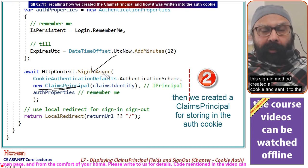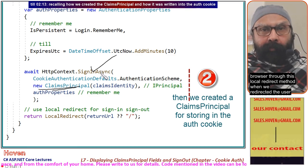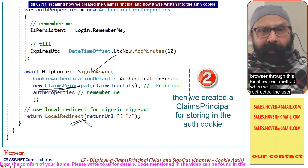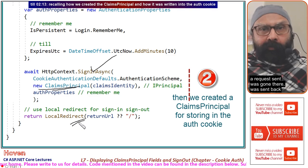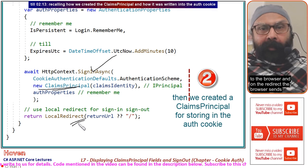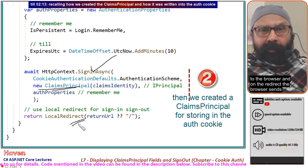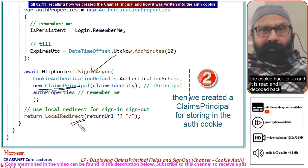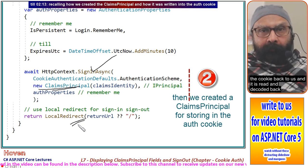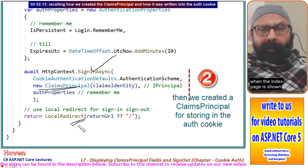The claims principal was passed to the sign-in method. This sign-in method created a cookie and sent it to the browser through the local redirect method. When we redirected the user, a request was sent back to the browser, and on the redirect, the browser sends the cookie back to us.